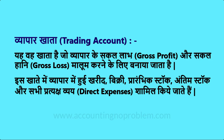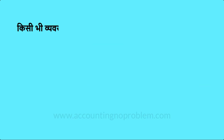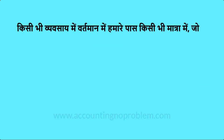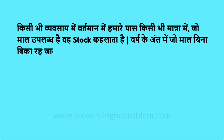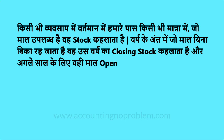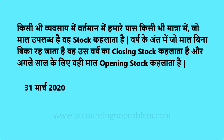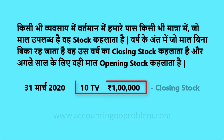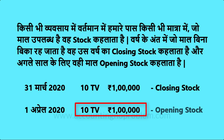खरीद, विक्री और Direct Expenses के बारे में हम पहले ही बता चुके हैं। अब प्रारंभिक स्टॉक और अंतिम स्टॉक को समझ लेते हैं। किसी भी व्यवसाय में वर्तमान में हमारे पास जो माल उपलब्ध है वो Stock कहलाता है। वर्ष के अंत में जो माल बिना बिका रह जाता है वो Closing Stock कहलाता है और अगले साल के लिए वही माल Opening Stock कहलाता है। जैसे 31 मार्च 2020 को 10 टीवी जिनका मूल्य एक लाख रुपए है — यह Closing Stock है, और 1 अप्रैल 2020 से वही माल Opening Stock कहलाएगा।